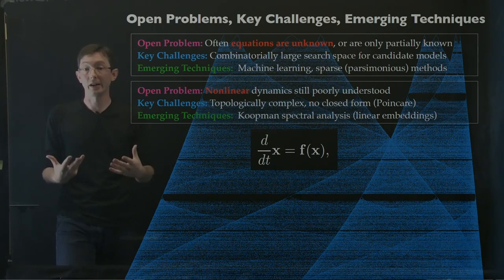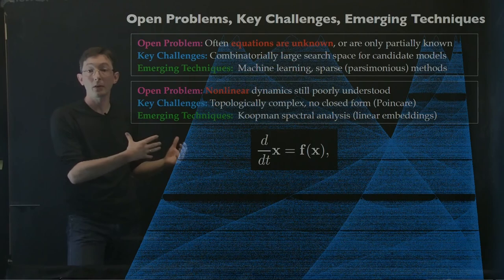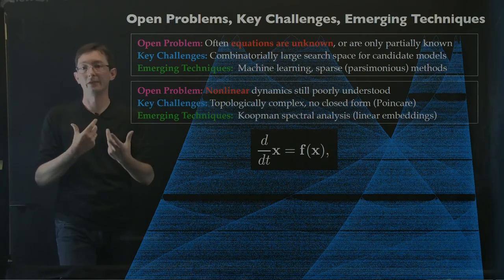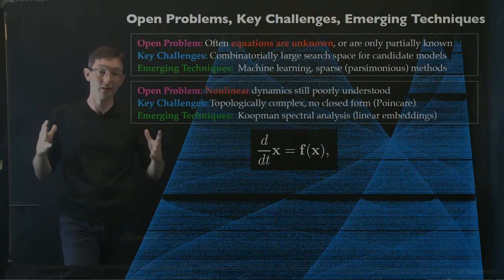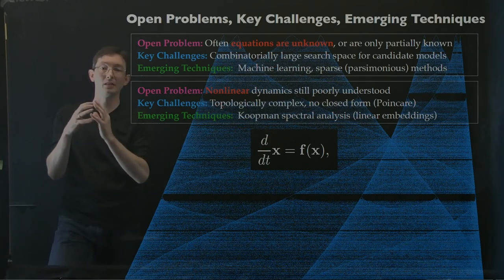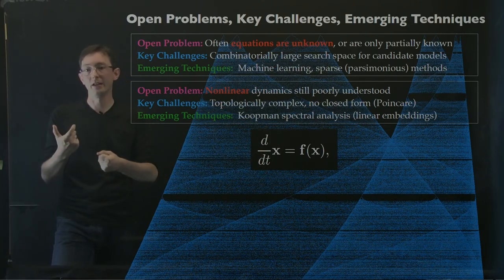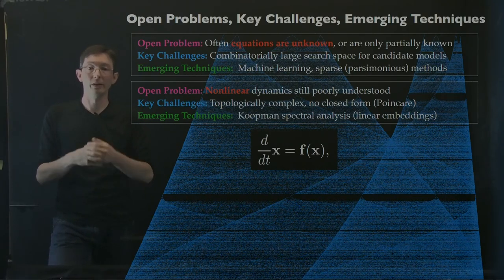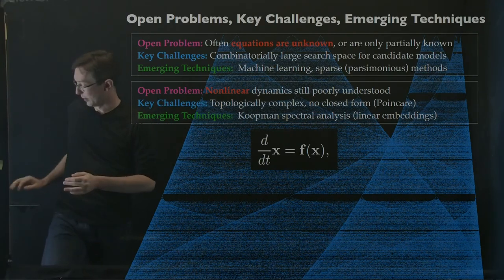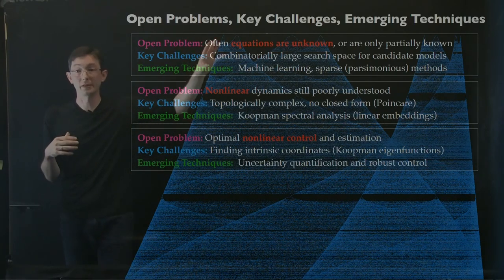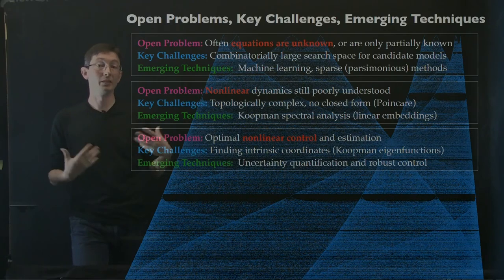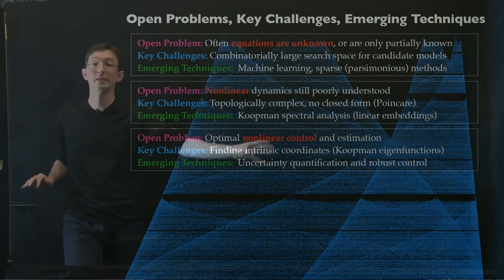Fundamentally, we are looking at nonlinear dynamical systems. The theory of linear systems is very well understood — we know a lot about how to analyze x dot equals A times x by looking at eigenvalues and eigenvectors. But nonlinear dynamics are still very poorly understood, and even a quadratic nonlinearity really confounds our understanding. We don't even know if solutions exist and are unique for some of these systems. As a control theorist, I want to use these models for estimation and control tasks to manipulate the behavior of my system.